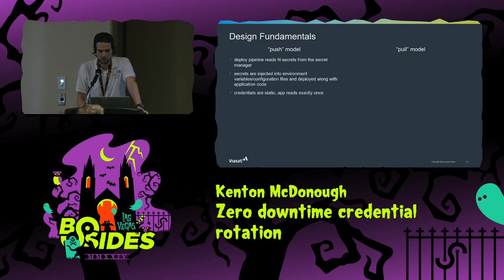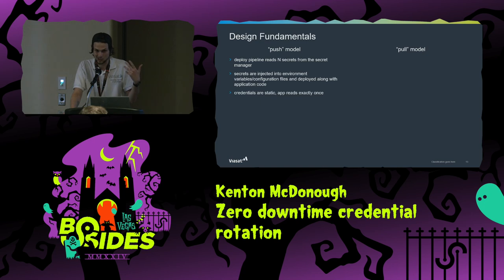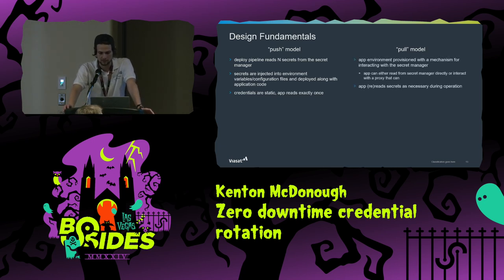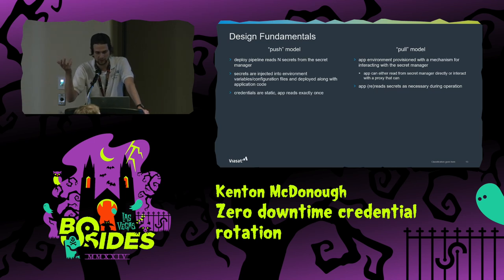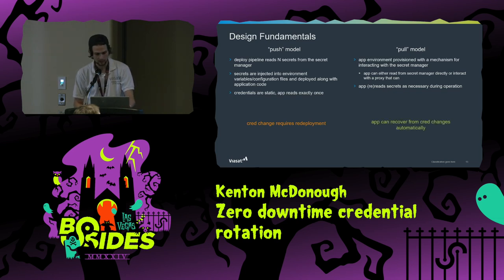In a push model, when you deploy your app, the deploy pipeline reads secrets from your secret manager and injects them into your environment — environment variables, configuration files, or ephemeral storage in Kubernetes. They're static: injected at startup and if you want to change them, you have to reboot. In a pull model, the app is provisioned with a mechanism for interacting with the secret manager directly — a library or proxy server — and rereads secrets as necessary during operation. In a push model, if you want to change credentials, you must redeploy. In a pull model, your app can recover from credential changes automatically, though there are caveats.